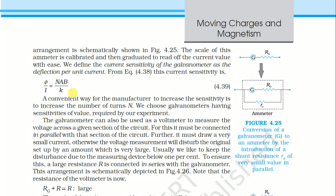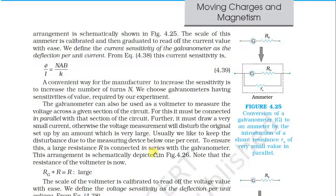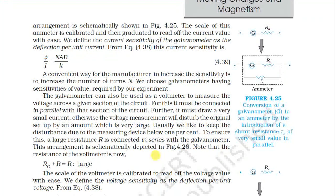The galvanometer can also be used as a voltmeter to measure voltage across a given section of the circuit. For this it must be connected in parallel with that section, and it must draw a very small current — otherwise the voltage measurement will disturb the original setup. To ensure disturbance is below one percent, a large resistance R is connected in series with the galvanometer. The resistance of the voltmeter is now rg + R ≈ R, which is a large value.